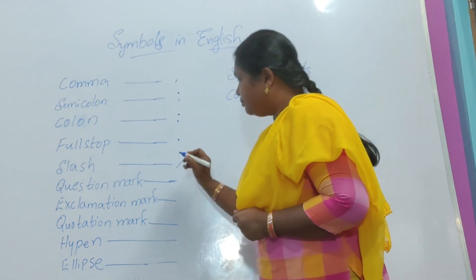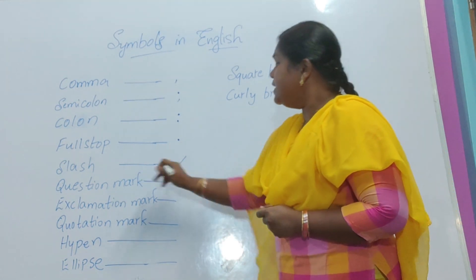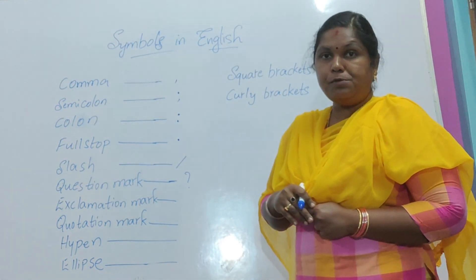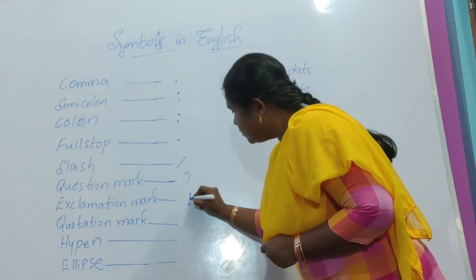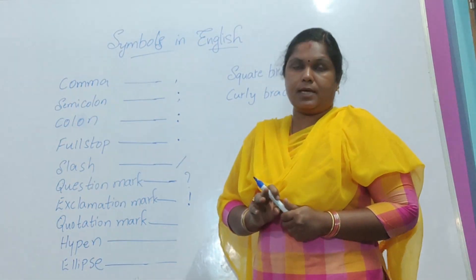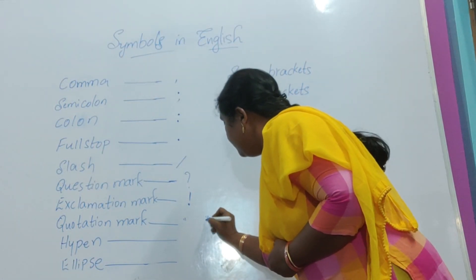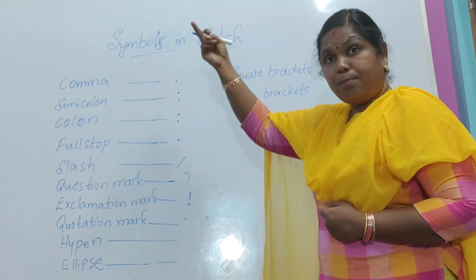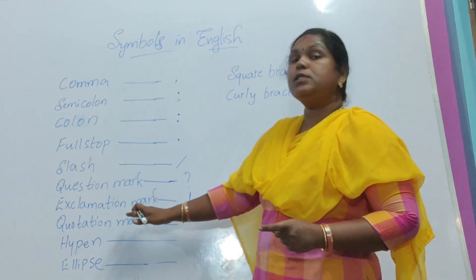Next comes the slash. Slash is used for giving options. Next comes the question mark. The exclamation mark goes with a standing line and a dot below. Next comes the quotation marks. Quotation marks are written with two commas facing upward at the start and at the end — that is what we call quotation marks.